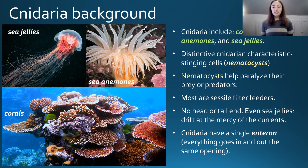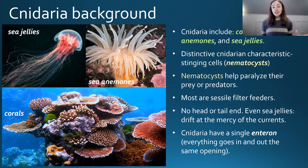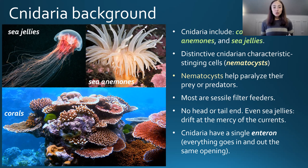In terms of cnidarian distinctive characteristics, one common characteristic that all cnidaria have is nematocytes, or stinging cells. These stinging cells help to paralyze their prey or predators, which is a beneficial characteristic that helps them live longer and reproduce more, making them more evolutionarily successful. Additionally, they are mostly sessile filter feeders and they have no head or tail end.